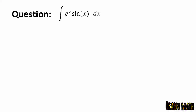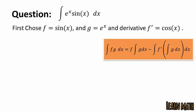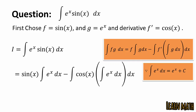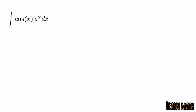The next question is: find the integration of eˣ sin x dx. Choose f equal to sin x and g equal to eˣ, and f prime equals cos x. Let I equal the integral of eˣ sin x dx. By using the integration by parts formula, we get sin x times the integral of eˣ dx, minus the whole integral of cos x times the integral of eˣ dx. This gives sin x times eˣ minus the integral of cos x times eˣ dx — call this equation 1. Now applying integration by parts again: here f equals cos x, g equals eˣ, and f prime equals minus sin x.